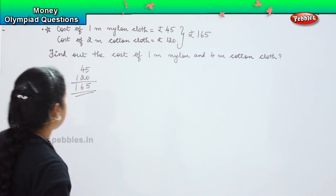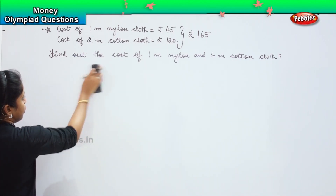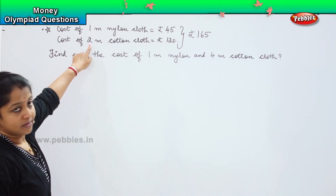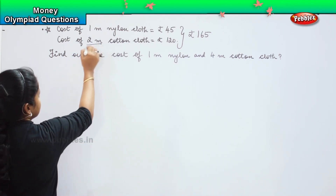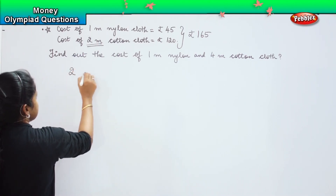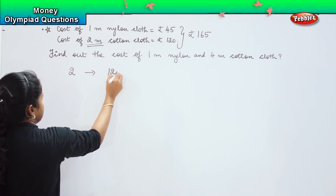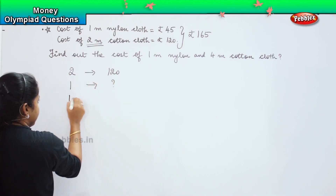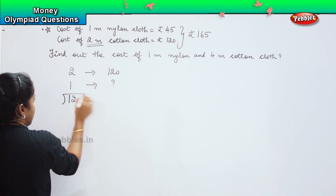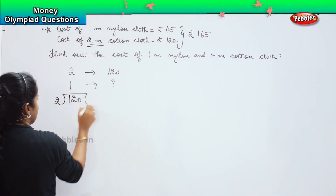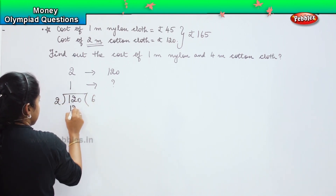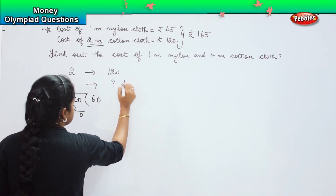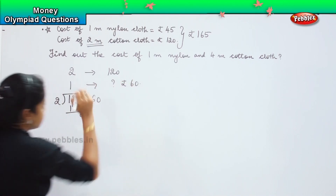Now the second part of this question: we need to find out the value of 1 meter because here they have given 2 meters. So 2 meters costs 120. What is the value of 1 meter? I will divide it — 120 divided by 2. So 1 meter is costing rupees 60.